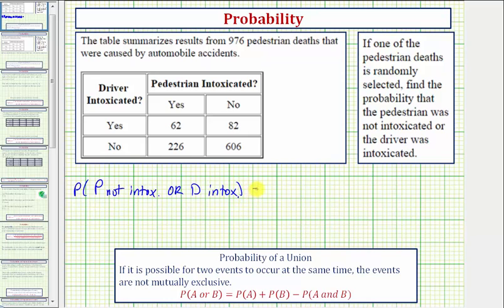Now we just solved this problem using the probability of a union formula given here below, where the probability of A or B equals the probability of A plus the probability of B minus the probability of A and B. But this time, let's use our reasoning skills and the information from the table to determine this probability.